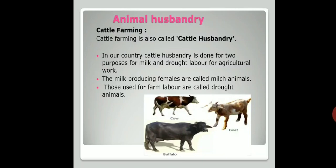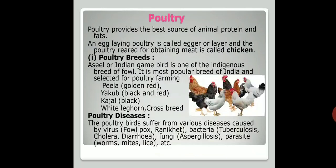In cattle farming, animals such as cow, buffalo, goat, and ox are reared. The females that produce milk are called milk animals, and those used for farm labor are called drought animals. This concludes the cattle farming part of animal husbandry.